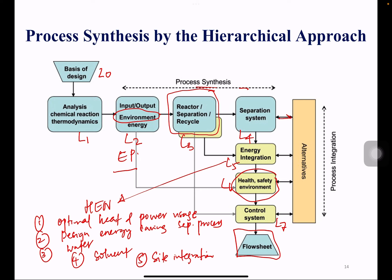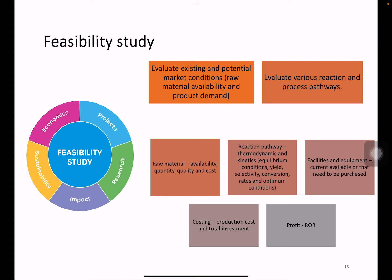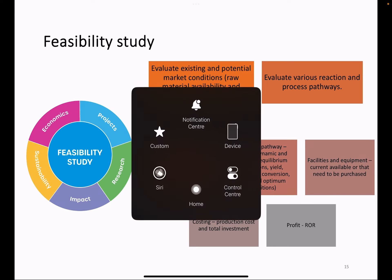At this stage, you can also look for alternative pathways and keep generating different process flow sheets using different alternatives. You can also perform process integration — taking one process from one source and another from a different source — and see how to integrate them to make a more sustainable process. We now move to the feasibility study, but first we will take a short break and come back for the lecture.